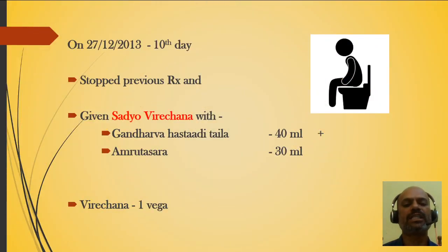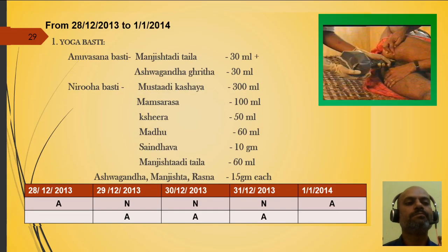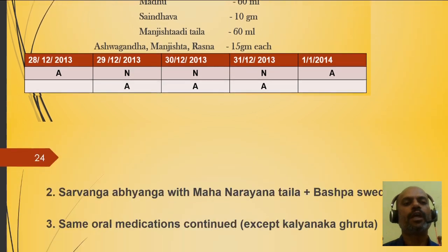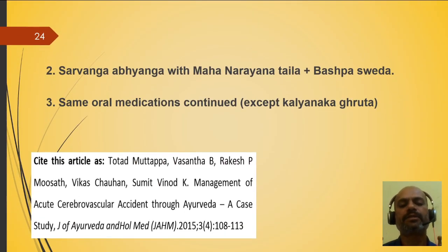On the 10th day, we gave Sramsana Virechana with Gandharvasajitayala 40 ml and Amrutsara 30 ml; Virechana vega observed was one. The next five days we adopted Mustadyapanna Kashaya Basti with Manjistha Jitayala and Ashweda Ghrita as Snehadravya. The Yogabasti schedule adopted was: first day Anuvasana, next three consecutive days Niruha-Anuvasana, and last day Anuvasana — total eight in the form of Yogabasti. Along with Yogabasti, Sarvanga Abhyanga with Mahananda Taila and Baspasweda, and same oral medicines except Kalyanaka Ghrita.